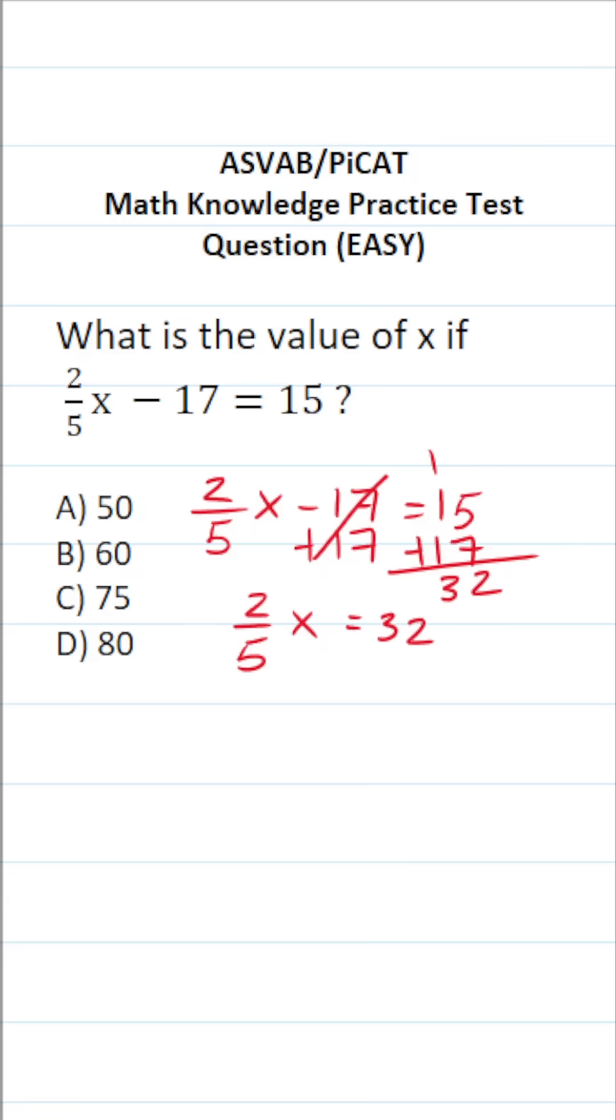Now we want to clear the two-fifths that's in front of x, and to do that, we're going to multiply both sides of the equation by the reciprocal of two-fifths, notably by 5 over 2. This crosses out here and here, leaving you with x on this side.